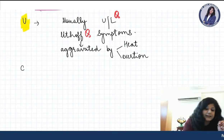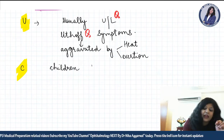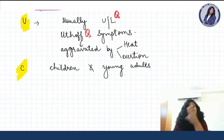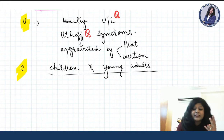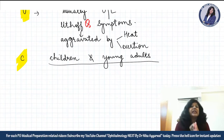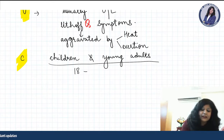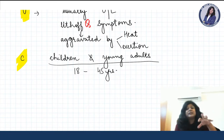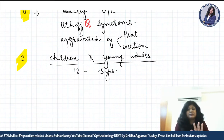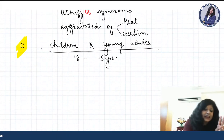C is for children — it is more common in children and young adults. When dealing with optic neuritis with multiple sclerosis, the age group involved is approximately 18 to 45 years. If the patient is a very small child or older than 50 years, we tend to exclude multiple sclerosis, because in older patients ischemic optic neuropathy is more common.